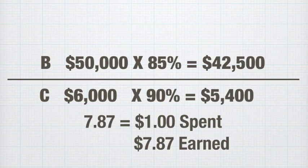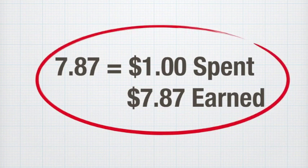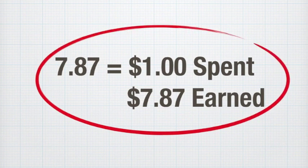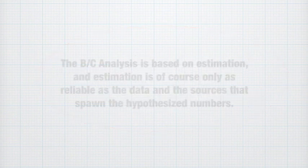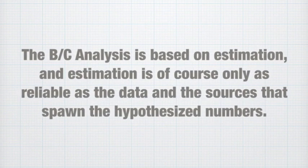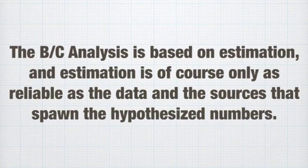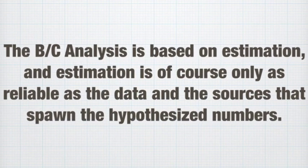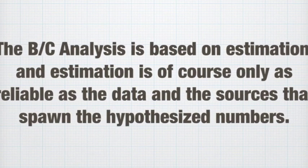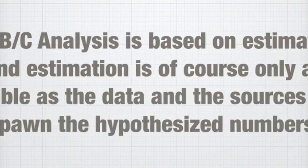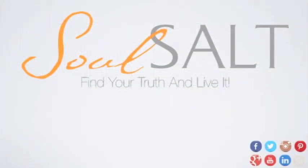The BC ratio is a quantitative estimate that helps us quickly see if our decision was sound, or if our decision was folly. You'll quickly realize that the BC analysis is based on estimation, and estimation is, of course, only as reliable as the data and the sources that spawn the hypothesized numbers. Use the BC analysis as a back-of-envelope informal means of checking out a decision's wisdom.